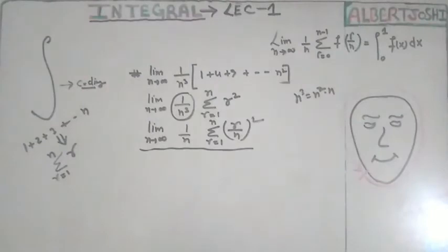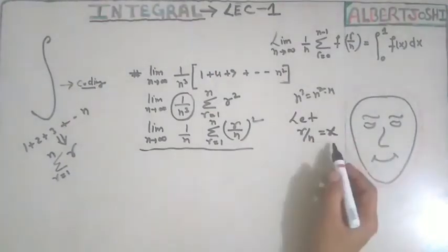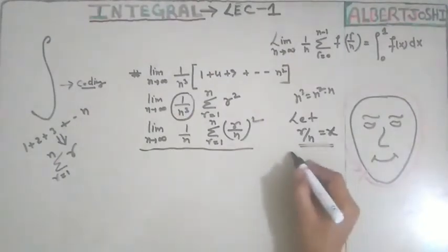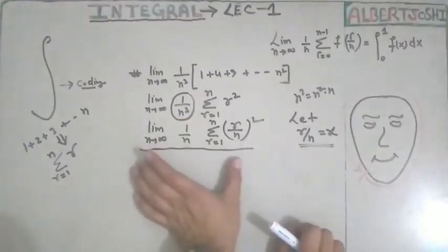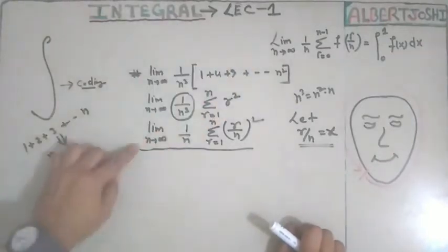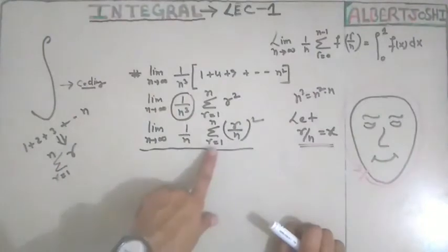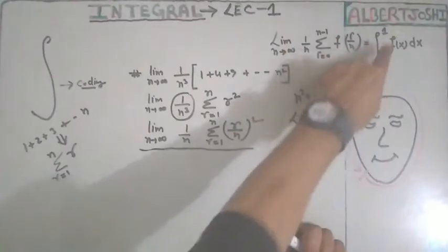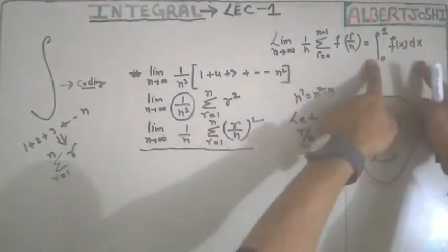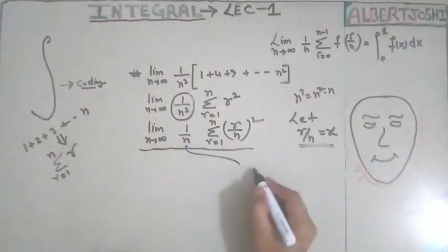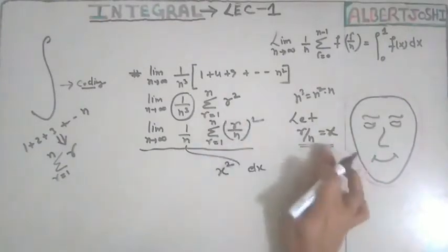We let r upon n equal to x. Differentiating gives 1 upon n dx. Whenever you have the form: limit n tends to infinite, 1 upon n, summation r equal to 1 to n of f(r upon n), you can directly convert it to integration. The function r upon n whole square becomes x square, and 1 upon n becomes dx. So we write the integral of x square dx.